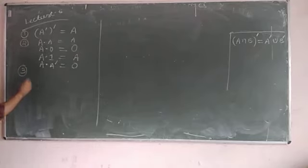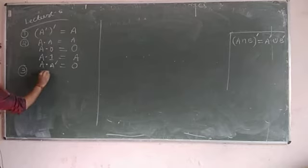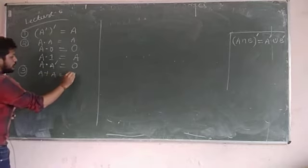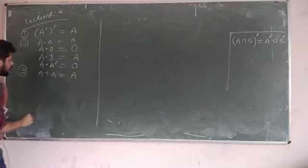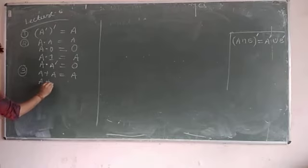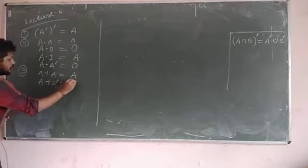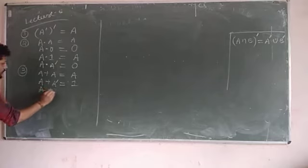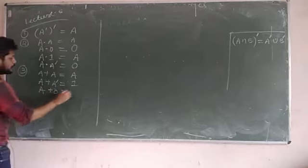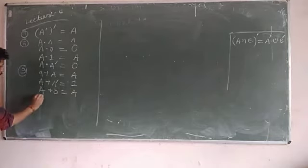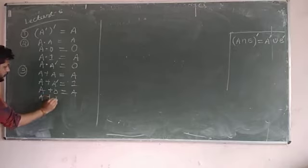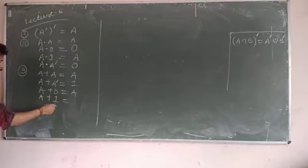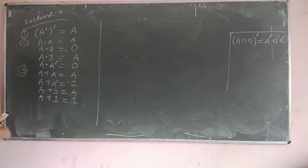From the OR gate: A OR A equals A; A OR A complement equals 1; A OR 0 equals A; A OR 1 equals 1, because if one variable in an OR gate is 1, the output is always 1.